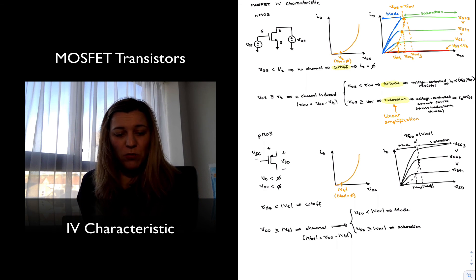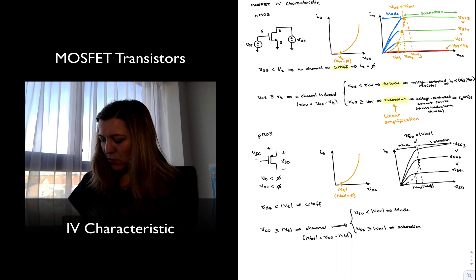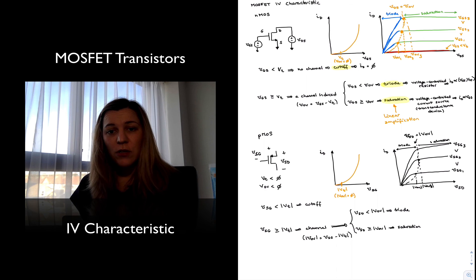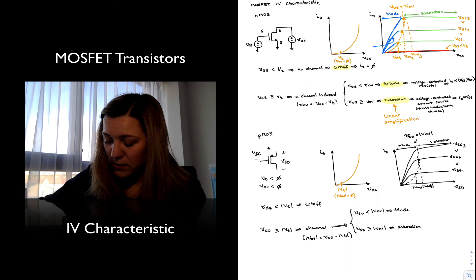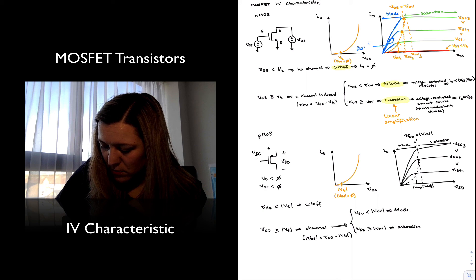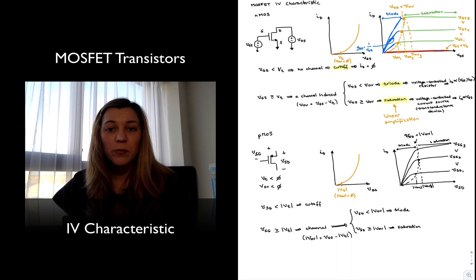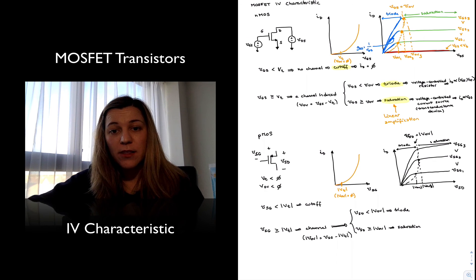One more thing worth mentioning: this is a transconductance device, and in the triode region the slope of those curves is the inverse of the resistance. We can represent that as GDS equals one over RDS — so the slope of the curve is 1 divided by the drain-to-source resistance. That's the IV characteristic for the MOSFET transistor.